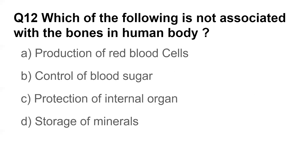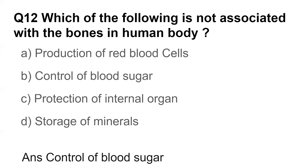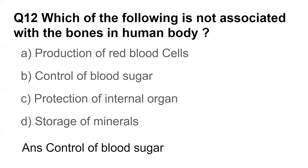Question number twelve: Which of the following is not associated with the bone in the human body? Options are production of red blood cells, control of blood sugar, protection of internal organs, and storage of minerals. The answer is control of blood sugar.